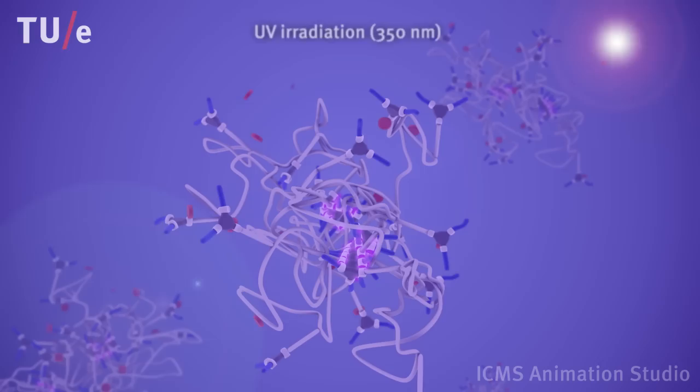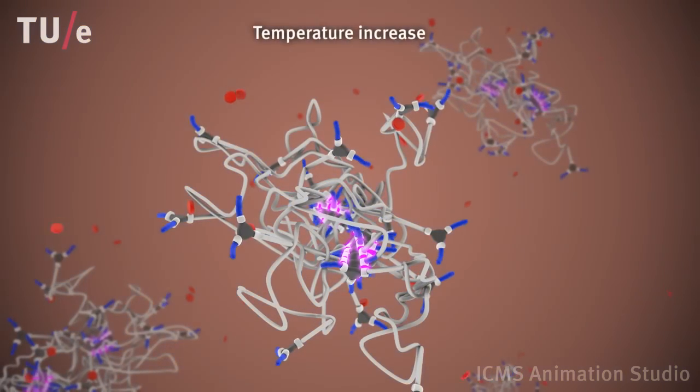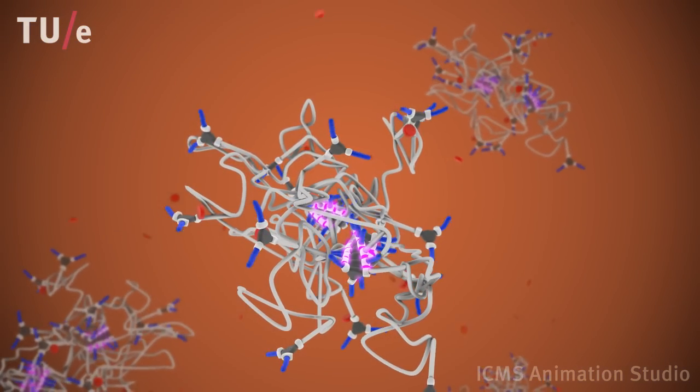Subsequent photo-irradiation, followed by heating and cooling steps, results in the formation of a well-defined chiral single-chain polymeric nanoparticle.